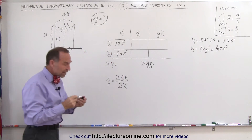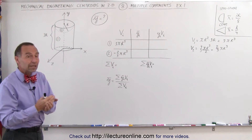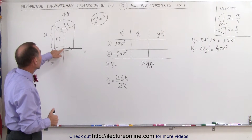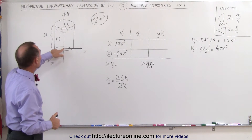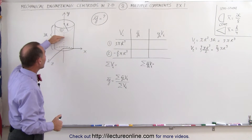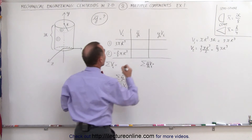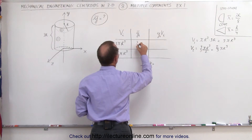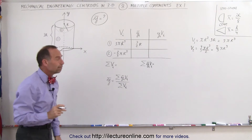Now we need to find the centroid of each of those objects relative to the origin. The centroid of the cylinder would be halfway between the bottom and the top — that would be one and a half times r, or three over two r, starting from the origin, right halfway in between.